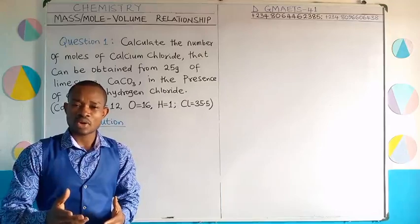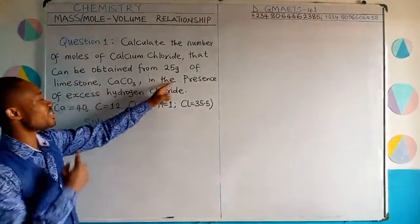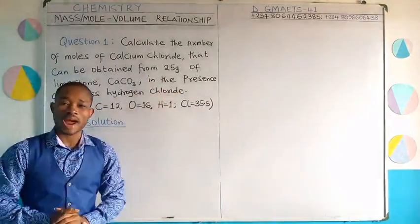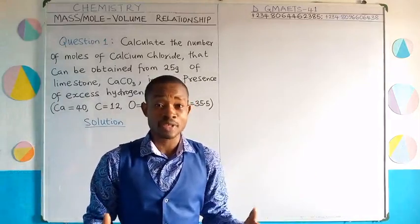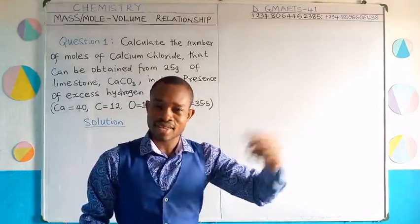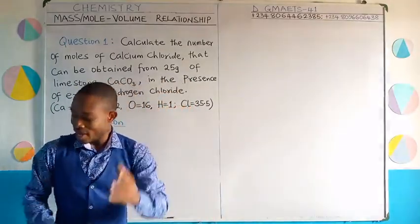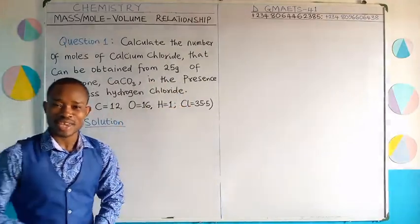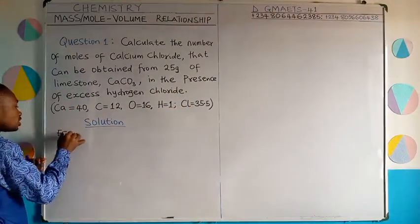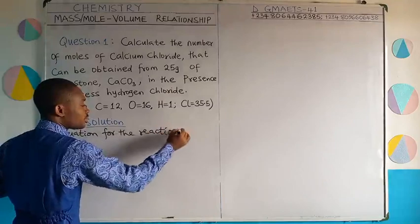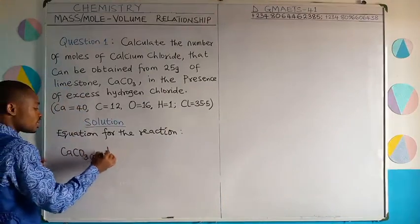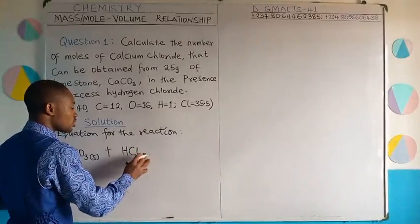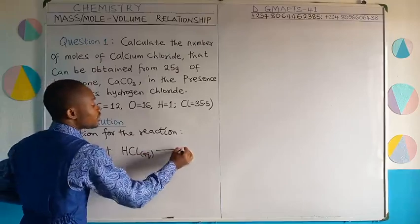Calcium chloride is produced when limestone reacts in the presence of excess hydrogen chloride. That means hydrogen chloride reacts with calcium carbonate, and in the reaction we expect calcium chloride to be obtained as a product. So we will write the reaction equation. This is the reaction between calcium carbonate (solid, which is limestone) reacting with excess hydrogen chloride (aqueous).